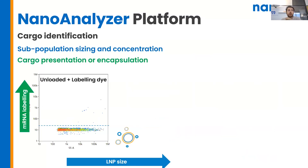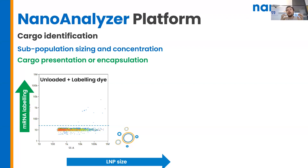To show you what that ends up looking like, here is an image of the dot plot churned out during nanoflow cytometry. Along the x-axis we have side scatter, and along the y-axis we have fluorescence. The x-axis is relative to the size of the particle, and the y-axis is relative to the quantity of RNA that is encapsulated. Each dot on these dot plots represents a single particle measured in a one-minute runtime.